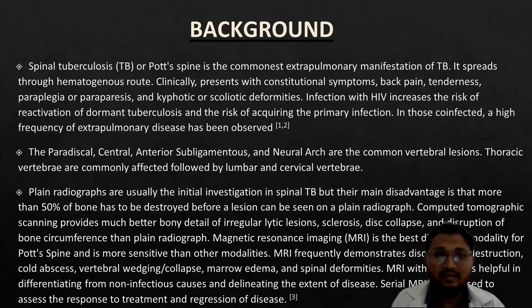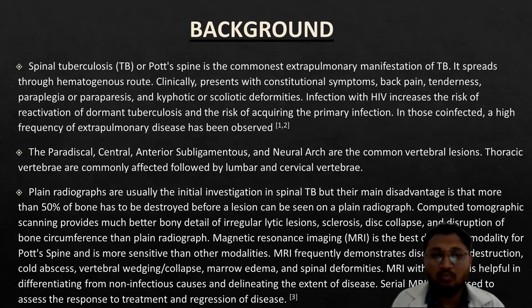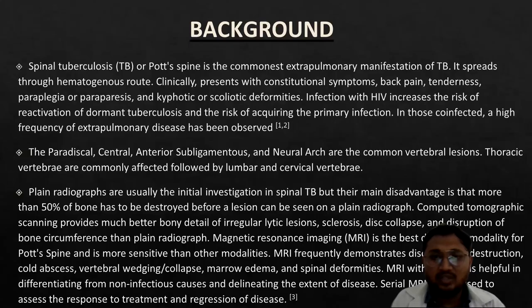The paradiscal, central, anterior ligamentous, and neural arc are the common vertebral lesions. Thoracic vertebrae are commonly affected, followed by lumbar and cervical vertebrae. Plain radiographs are usually the initial investigation in spine disease, but the main disadvantage is that more than 50% of bone has to be destroyed before a lesion can be seen on plain radiograph. MRI, or magnetic resonance imaging, is the best modality for Pott's spine, and frequently demonstrates disc collapse, cold abscess, vertebral body changes, marrow edema, and spinal deformities.